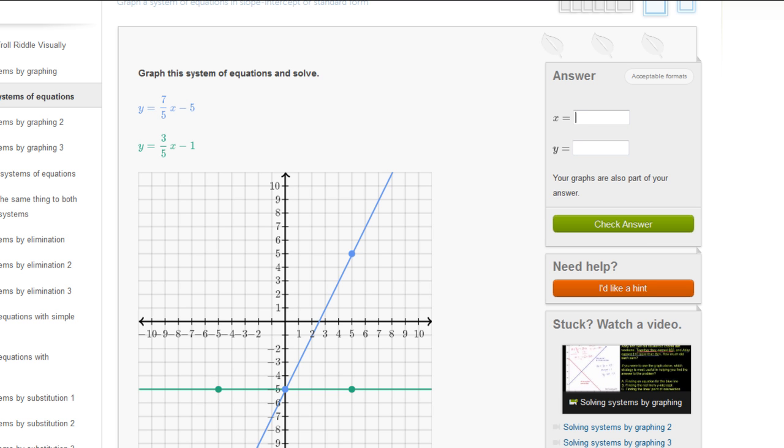And then we see its slope is 7 fifths. This was conveniently placed in slope-intercept form for us. So it's rise over run. For every time it moves 5 to the right, it's going to move 7 up. So if it moves 1, 2, 3, 4, 5 to the right, it's going to move 7 up: 1, 2, 3, 4, 5, 6, 7. So it'll get right over there.